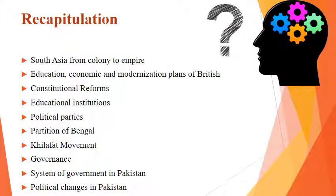As a part of recapitulation, since today is the last week of OSP Round 2, in six weeks we have been discussing topics like South Asia from Colony to Empire, education, economic and modernization plans of the British, constitutional reforms in United India such as 1861, 1892, 1909, and 1919, and constitutional development in Pakistan with constitutions of 1956, 1962, and 1973.